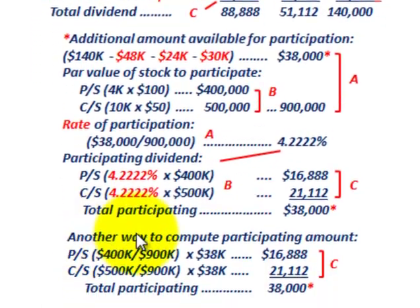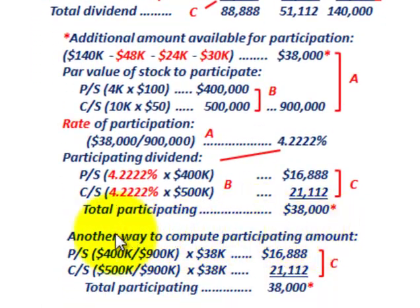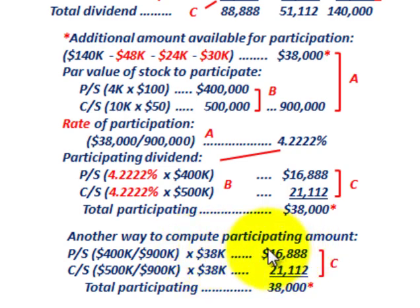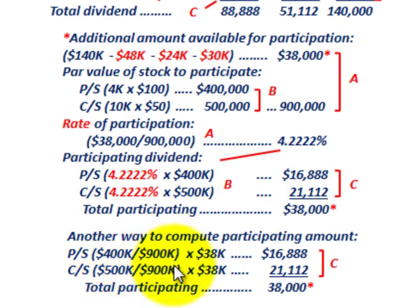There's another way to compute the participating amount. For preferred stock: $400,000 ÷ $900,000 × $38,000 = $16,888 — same as before. For common stock: $500,000 ÷ $900,000 × $38,000 = $21,112 — same result. Total participating amount is $38,000.